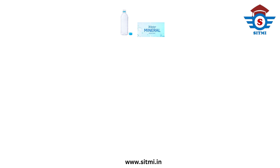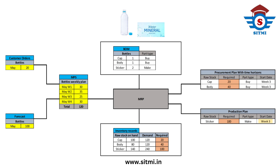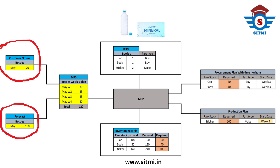Let's take an example of a bottle manufacturing company. This company manufactures bottles, which need a cap, a bottle body, and a label which is pasted on the bottle. The customer order for the month of May for bottles is 20 quantity, which is already received, and the forecast for the month of May is 100 quantity. All these inputs go into the MPS.